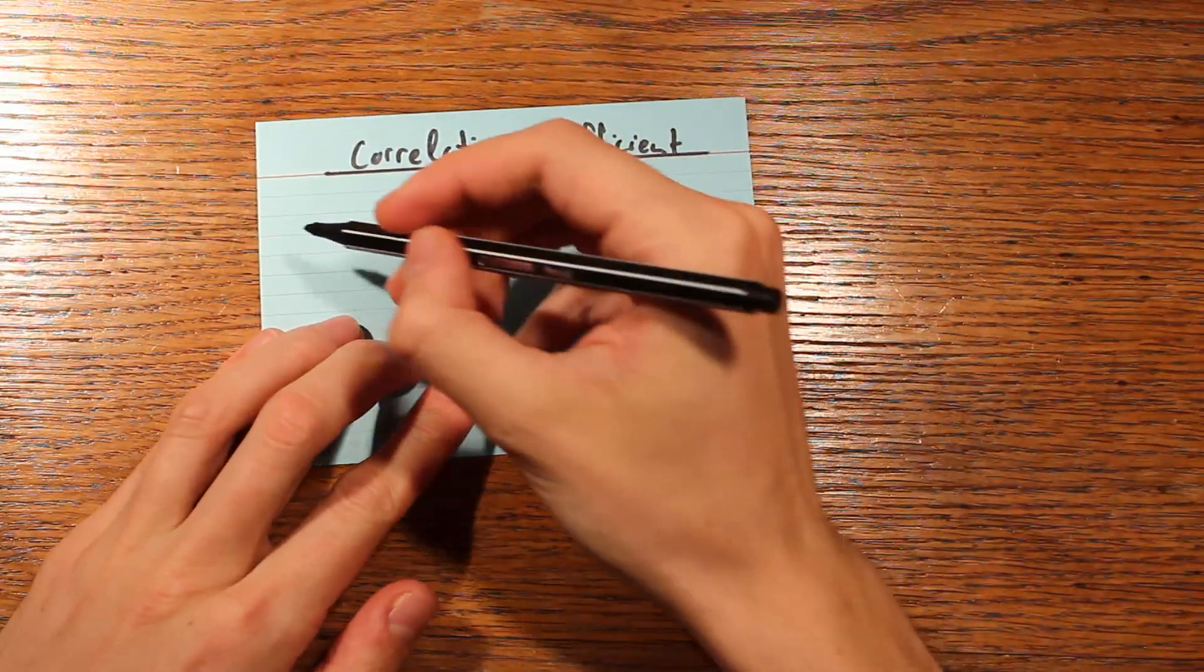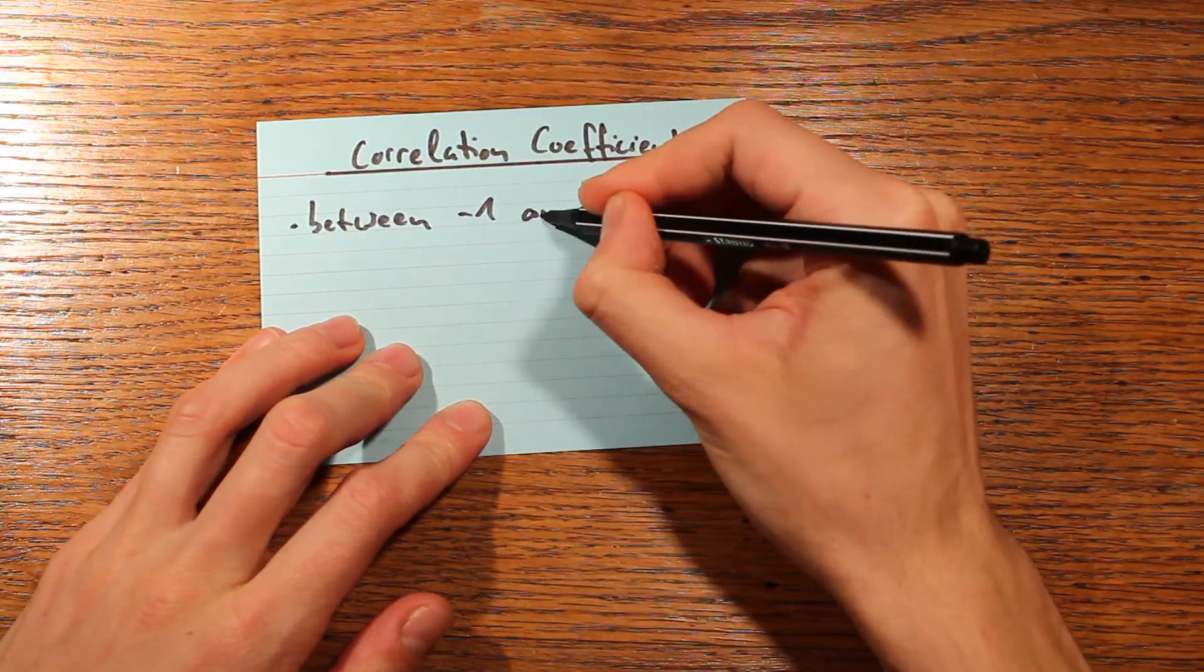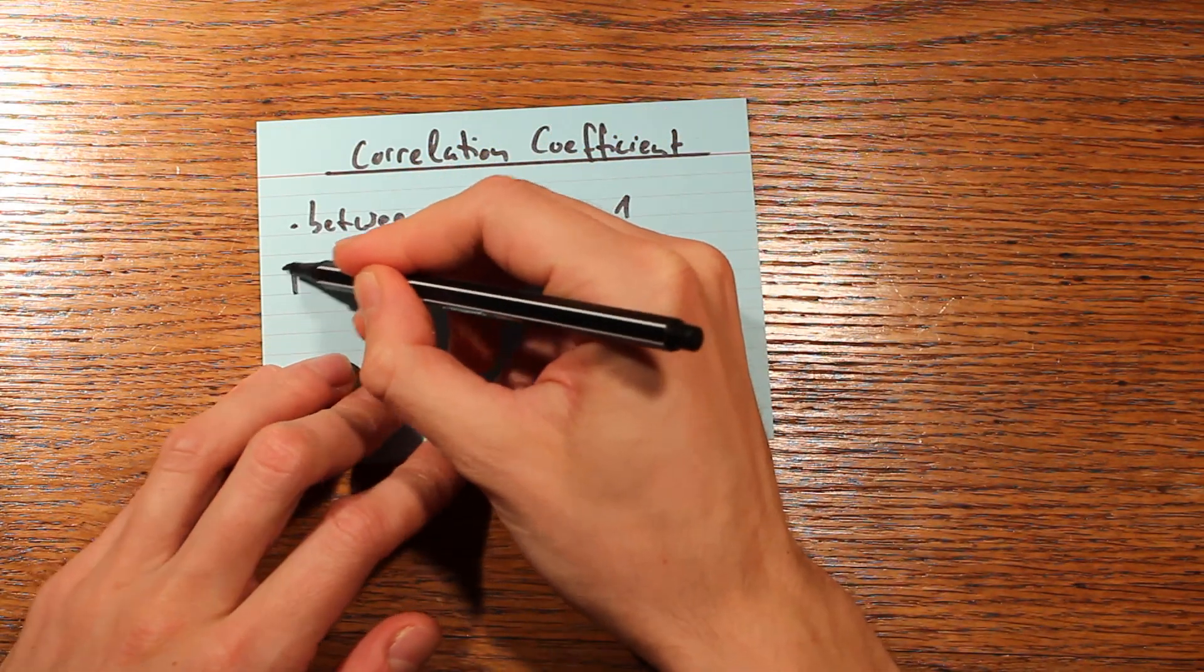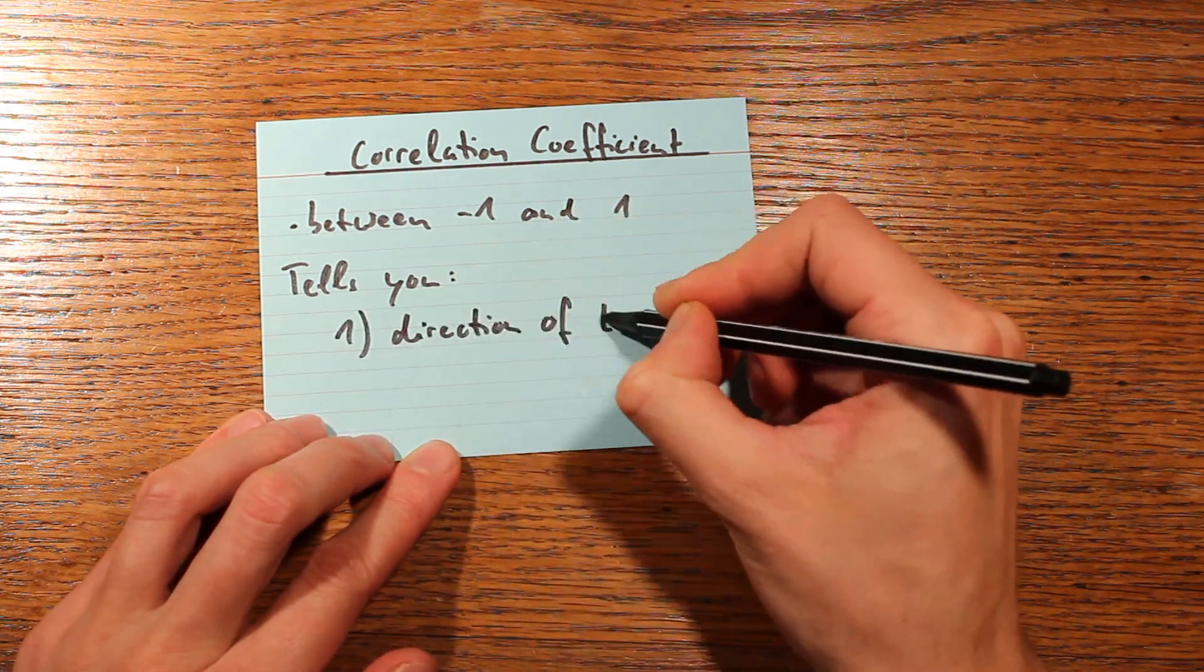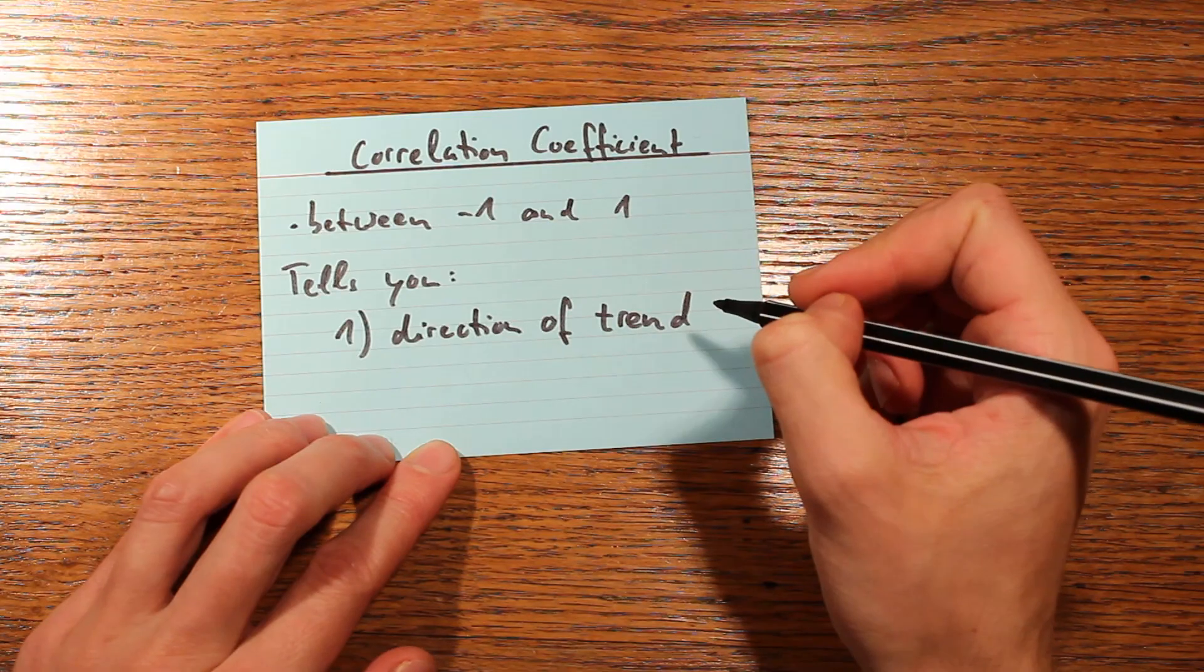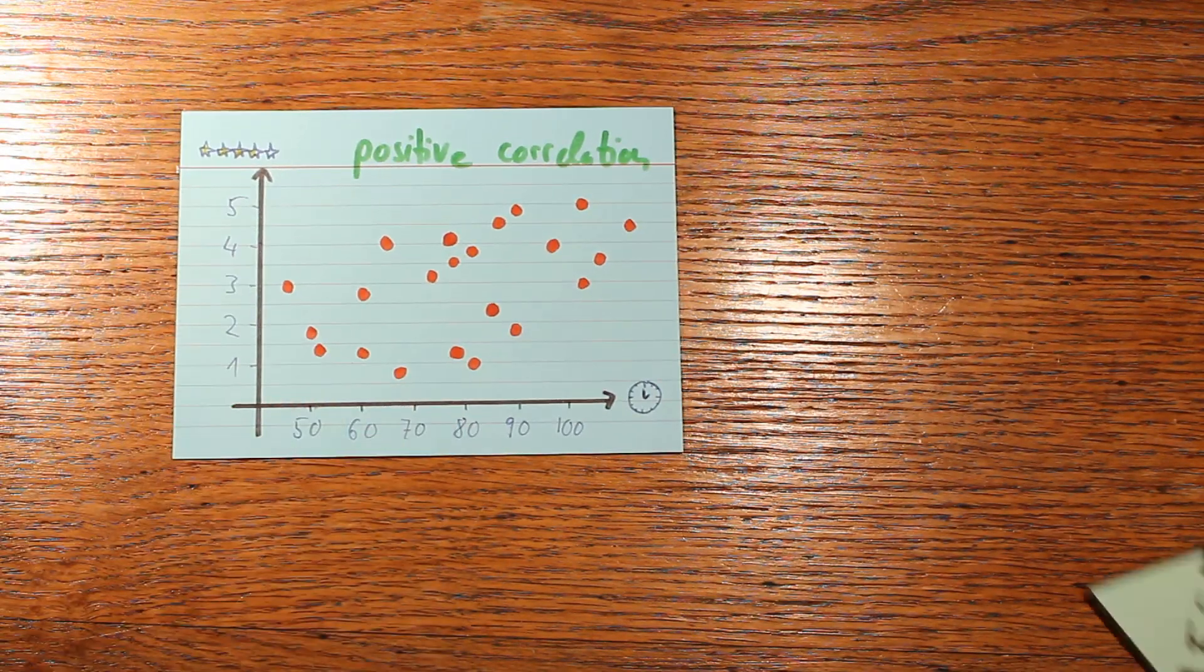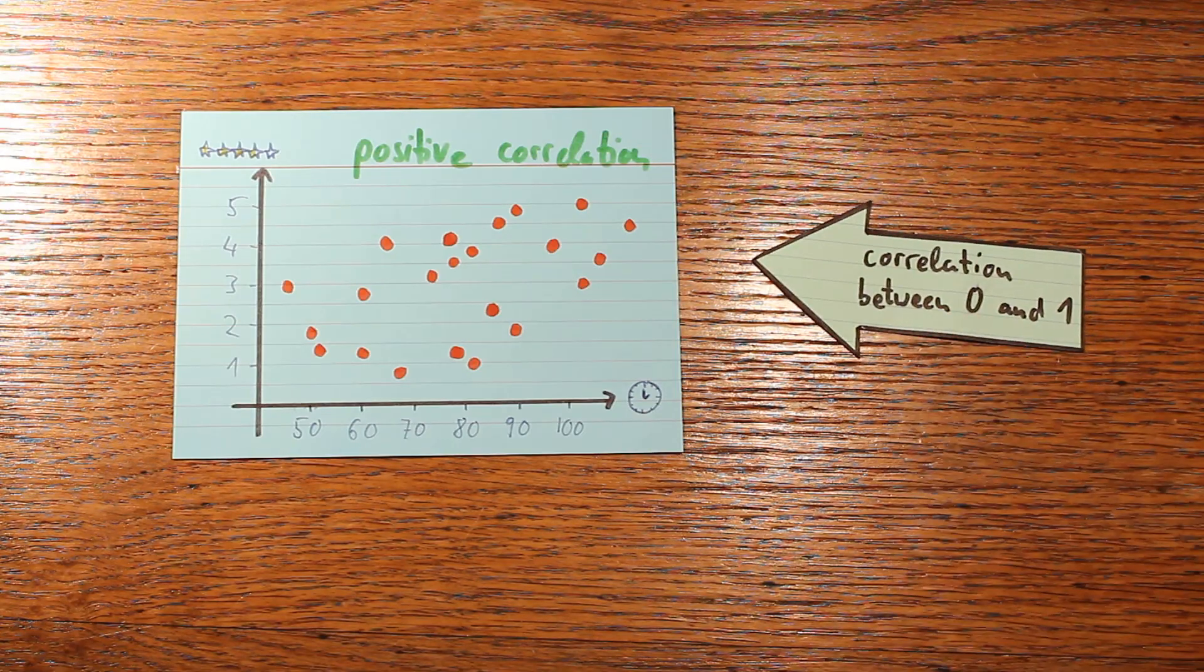Now, the correlation coefficient is the single number between minus 1 and 1 that expresses this kind of trend. And it gives you two pieces of information. For one it tells you, is the trend negative or positive? So is it upwards or downwards? If the trend is positive, then the correlation coefficient will be positive as well. It'll be between 0 and 1.